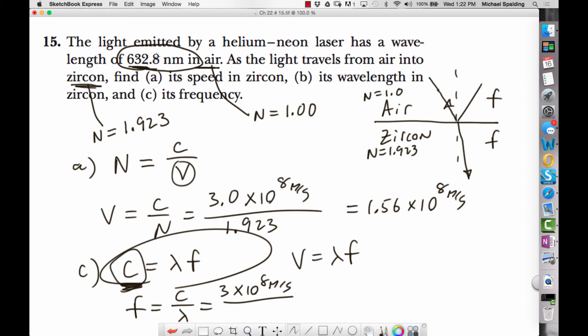but we have to convert it to meters. So nano is 10 to the negative 9, so when you convert this, this is going to be 6.328 times 10 to the negative 7 meters. So this gives a frequency of 4.74 times 10 to the 14th hertz.